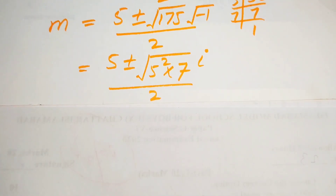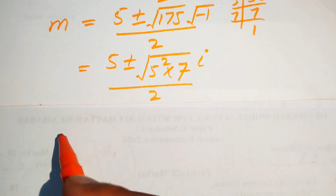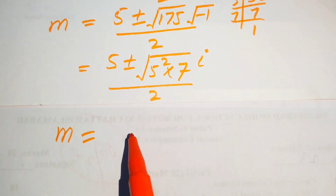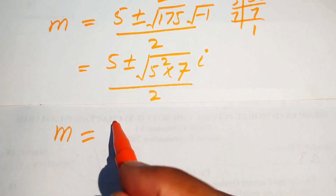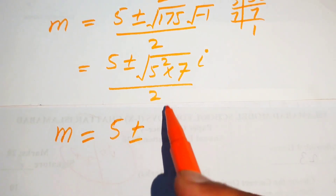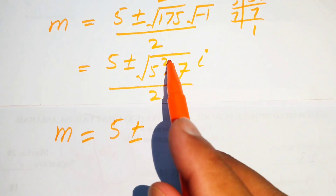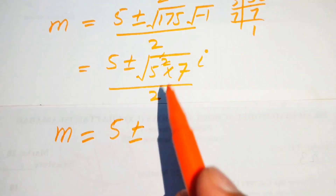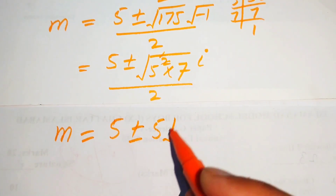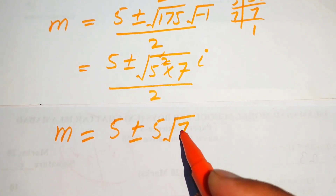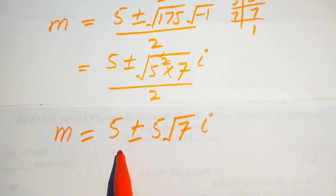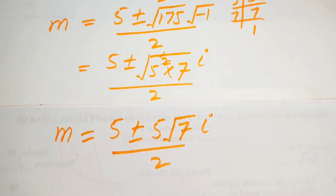Taking the square root of 5 squared out of the radical, we get m equals 5 plus or minus 5 times the square root of 7 times i, all divided by 2.